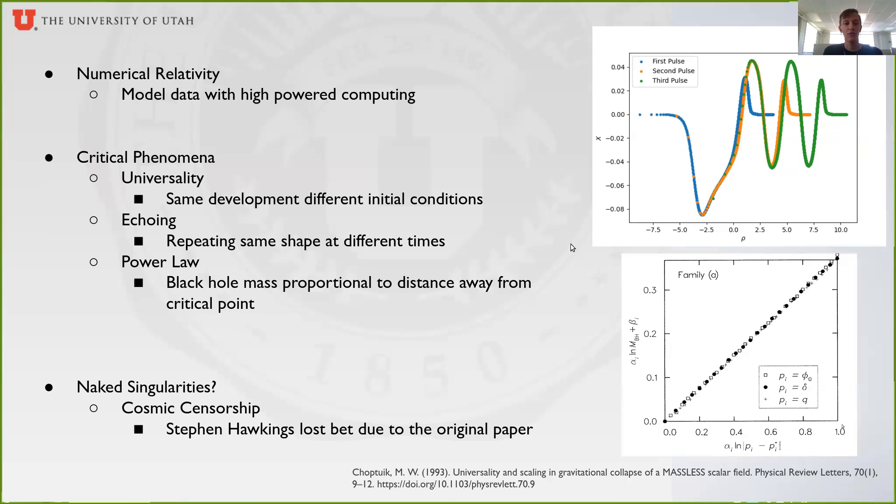The third thing we viewed was power law, where the distance of the parameter away from the critical parameter is proportional to the black hole mass that is formed. This means as we get closer to the critical parameter, our black hole mass gets smaller and smaller.